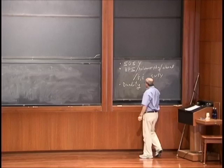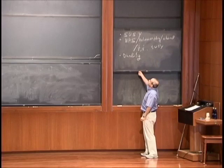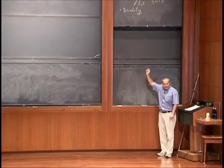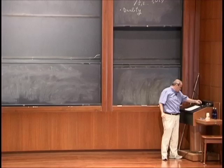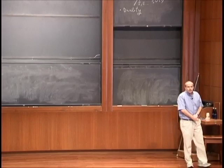So if we want to summarize the school, this blackboard is the summary: supersymmetry, BPS/holomorphy, and duality. Even people with memory deficiency can remember these three things. Another aspect of supersymmetry that has not been stressed is the fact that we have different numbers of supersymmetries.